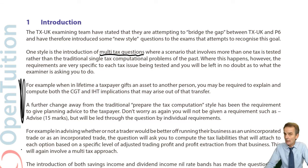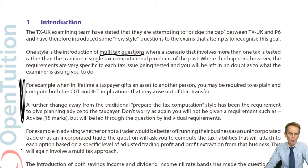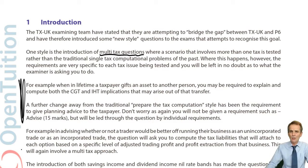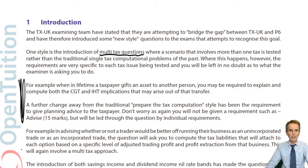For capital gains tax purposes, it would be dealt with as a no gain, no loss transfer — so no gain arises on the transfer between spouses. It transfers at the cost of the transferor, becoming the cost to the transferee, rather than at market value. We also said there'll be no IHT problems, because transfers between spouses or civil partners are exempt.